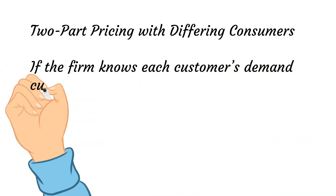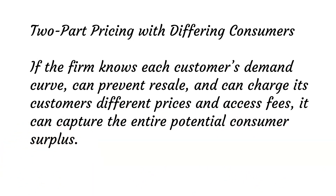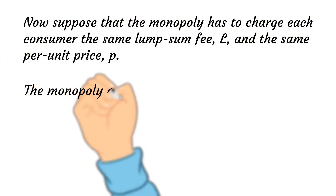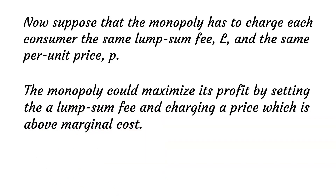If consumers have different price elasticities and the firm knows each consumer's demand curve and can prevent resale, it can charge different prices and access fees to capture the entire potential consumer surplus. Now suppose the monopoly must charge each customer the same lump-sum fee and the same per-unit price; then it could maximize its profit by setting a lower lump-sum fee and charging a price above the marginal cost.